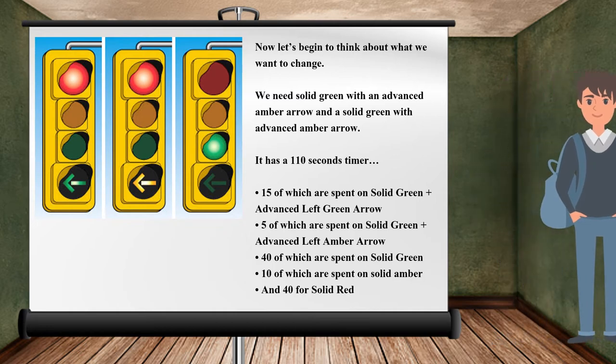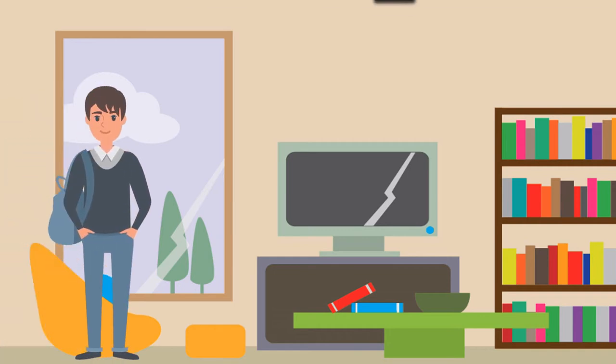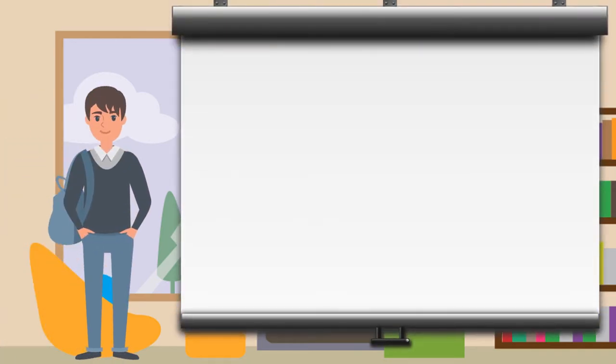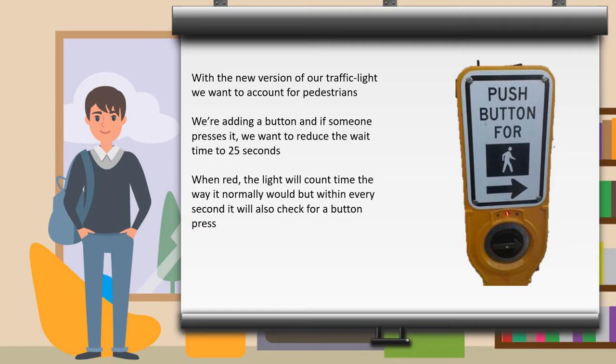With the new version of our traffic light, we want to account for pedestrians. Now this is where we get into some functionalities. The pedestrian button is going to look like this. We are not worried about how it works. We are worried about how we are going to integrate it into our program.